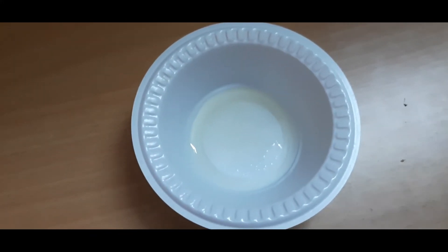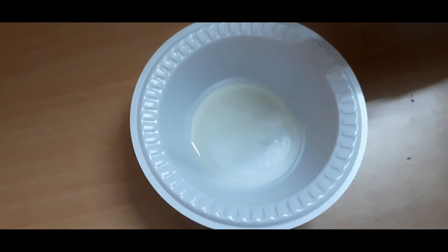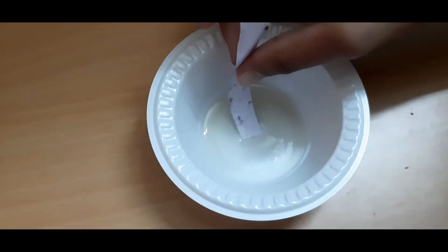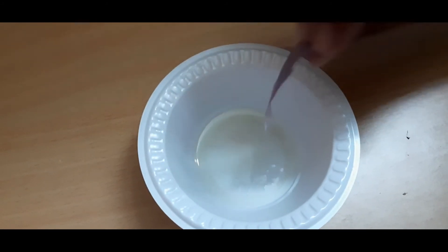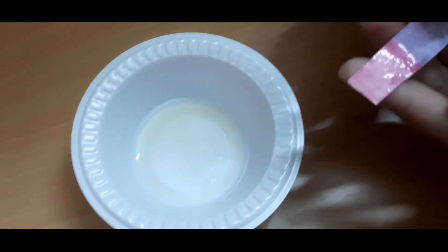So first let's test it on lemon juice. Take your litmus strip and slowly press it inside for 2 seconds. And there we go, it turned red.